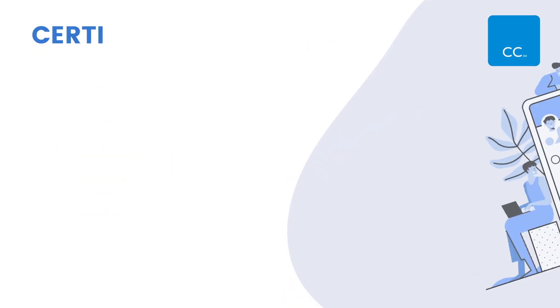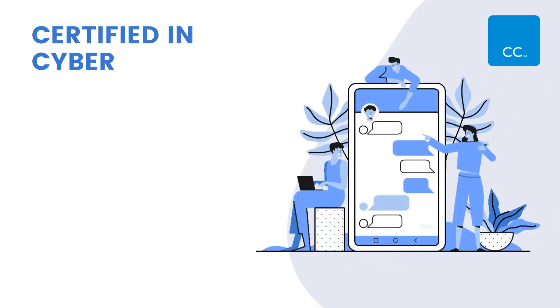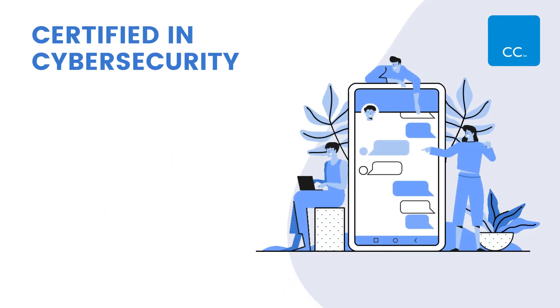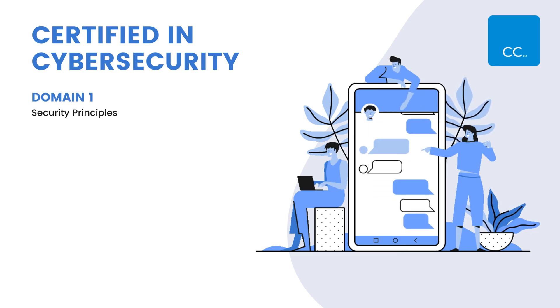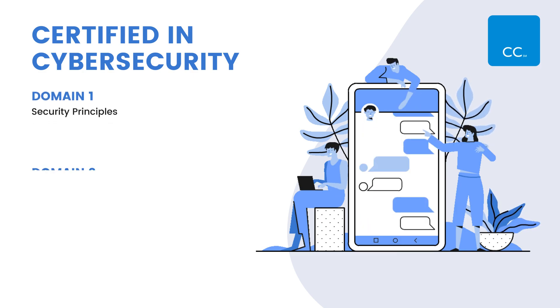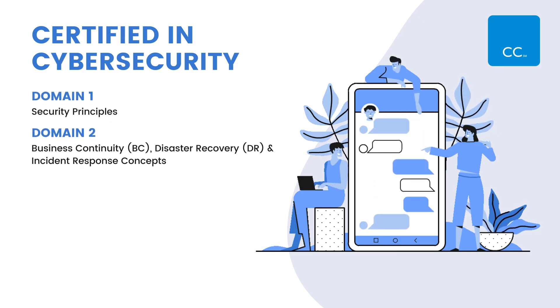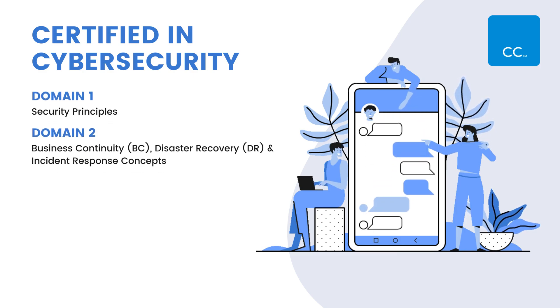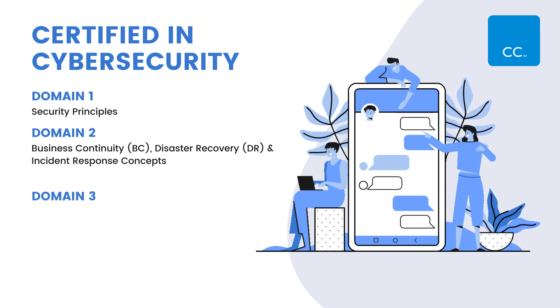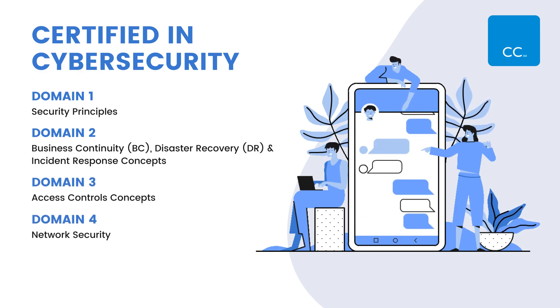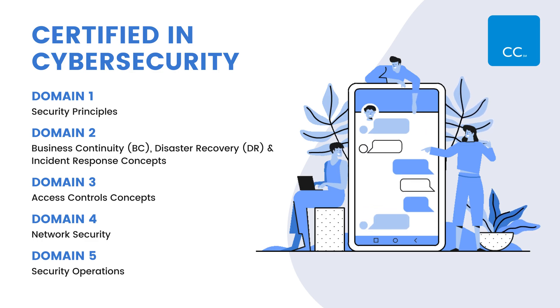The Certified in Cybersecurity Exam Outline covers the five domains below: security principles, business continuity, disaster recovery and incident response concepts, access controls concepts, network security, and security operations.